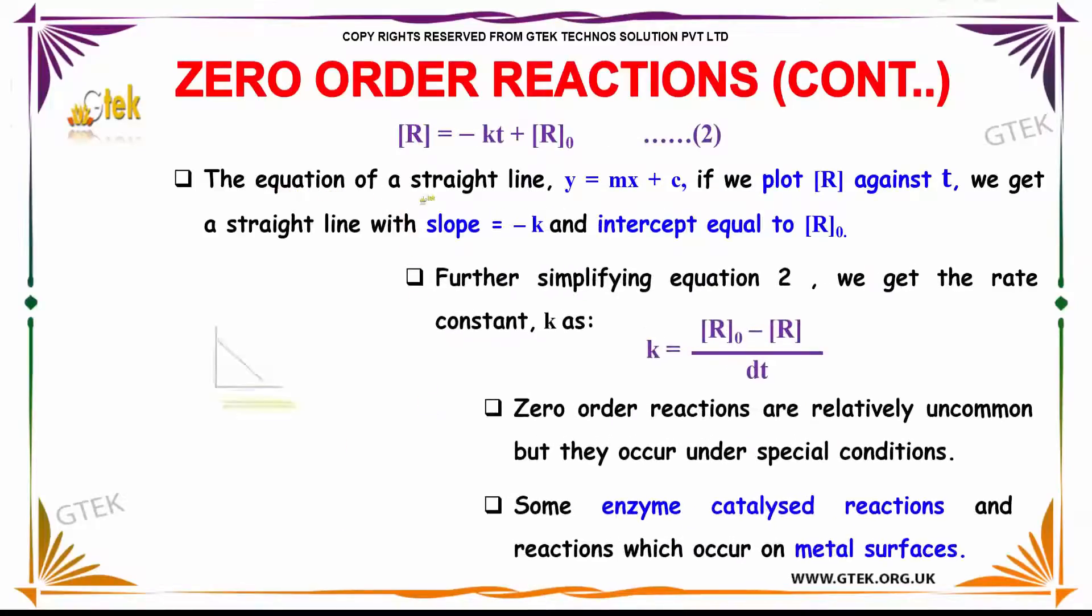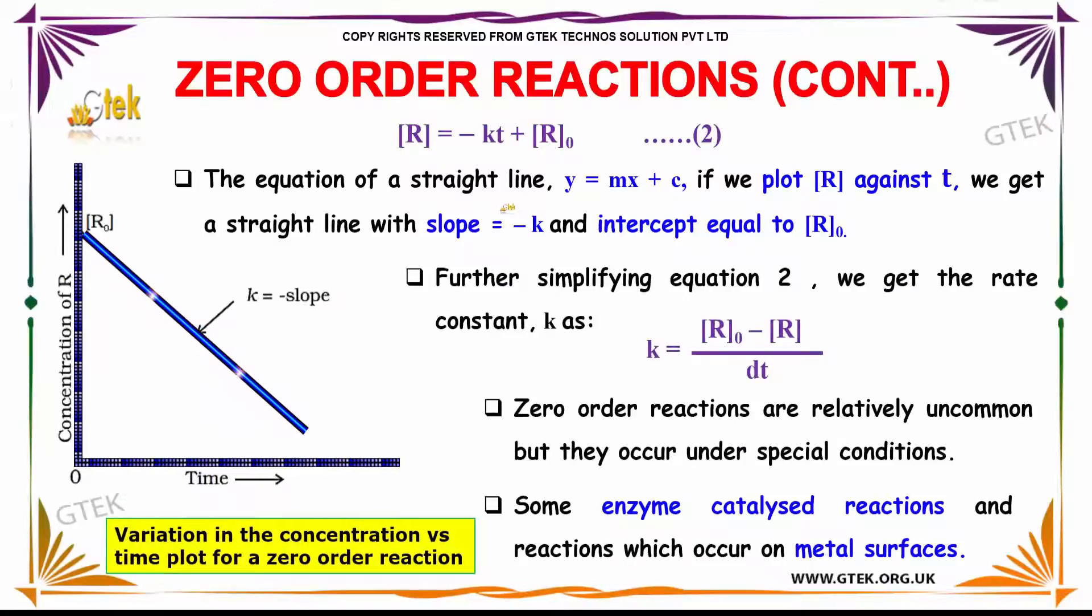This equation indicates by plotting it you'll be getting a straight line, y equals mx plus c. We plot [R] against t, we get a straight line with the slope minus k and intercept equal to R naught.